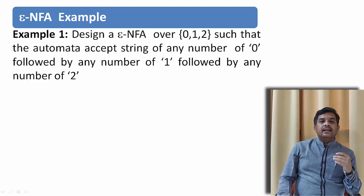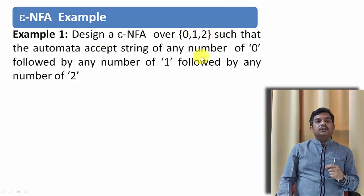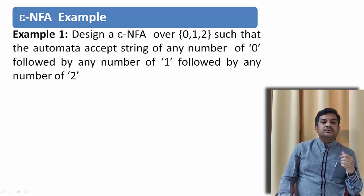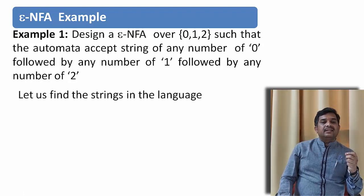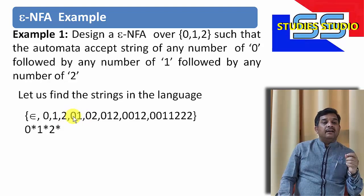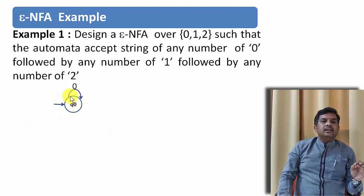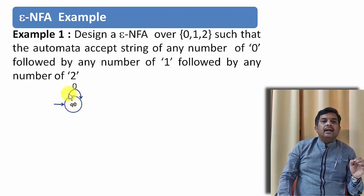Let us see an example. Design an epsilon-NFA over 0, 1, and 2 such that the automata accepts string of any number of 0s followed by any number of 1s followed by any number of 2s. So let us see the strings what this language accepts. We can start with epsilon. We can have 0s, we can have 1s, we can have 2s. But whenever there will be 1, before that if possible we will be having 0. Before 2 we can have 0. But after 2 we need not be having 0 or 1. After 1 we cannot have 0s like that. So it means we can say number of 0s, number of 1s then number of 2s. It means I can write 0 star, 1 star, 2 star.